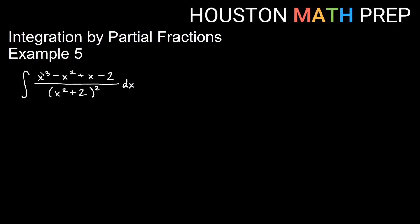We've got the integral of x³ - x² + x - 2 all over this repeated factor (x² + 2)². We have worked out our partial fractions for this in another video, so you can check out the work to get the partial fractions we're about to write down here in the link provided.